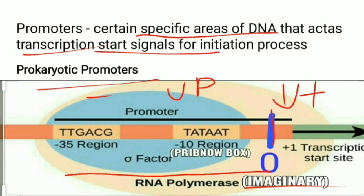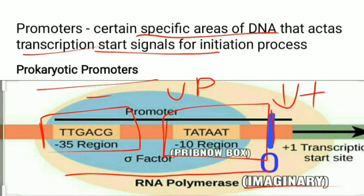There are two promoter regions identified in prokaryotes: one is present at 35 base pairs upstream, and the other is the Pribnow box — a TATA sequence present at 10 base pairs upstream. These are the two prokaryotic promoter regions.